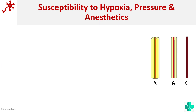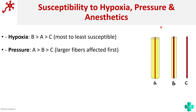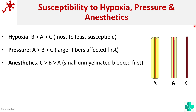An important applied aspect is the susceptibility of nerve fibers to hypoxia, pressure, and anesthetics. B fibers are most susceptible to hypoxia, while C fibers are least susceptible. For pressure, larger fibers are affected first, so A fibers are more affected than C fibers. For anesthetics, it is the opposite — small, unmyelinated C fibers are most affected. The exception to the size pattern is hypoxia, where B fibers are most vulnerable.